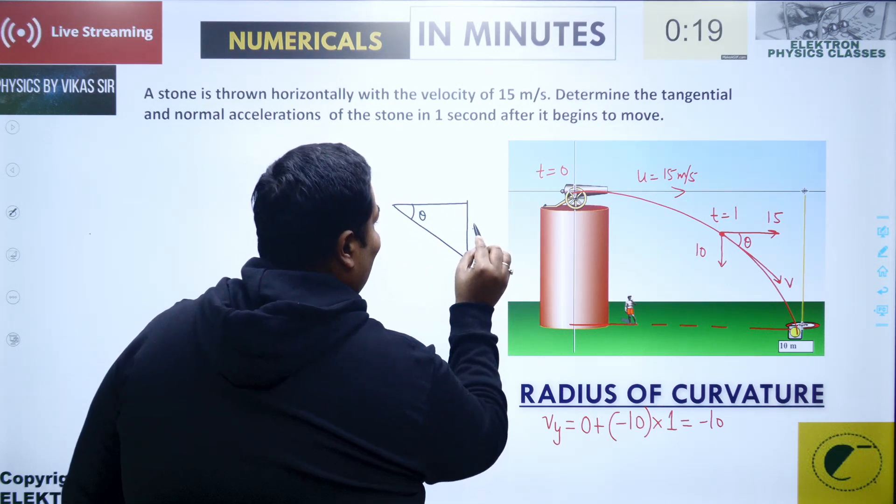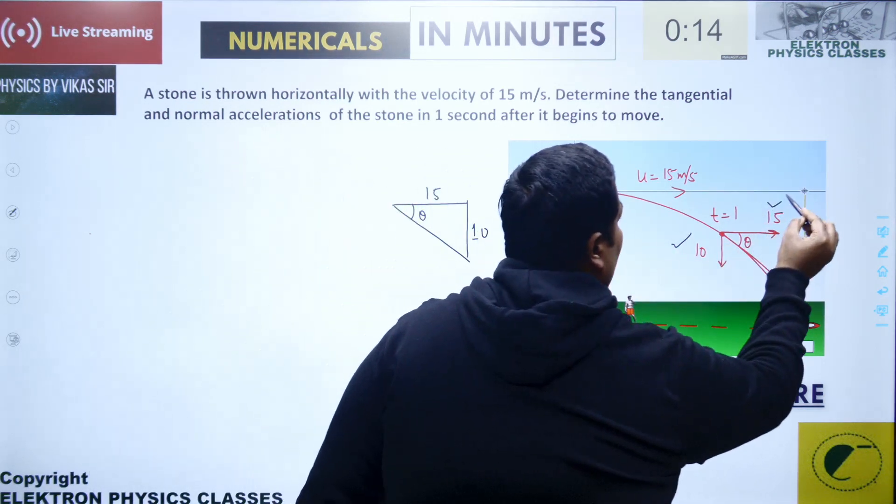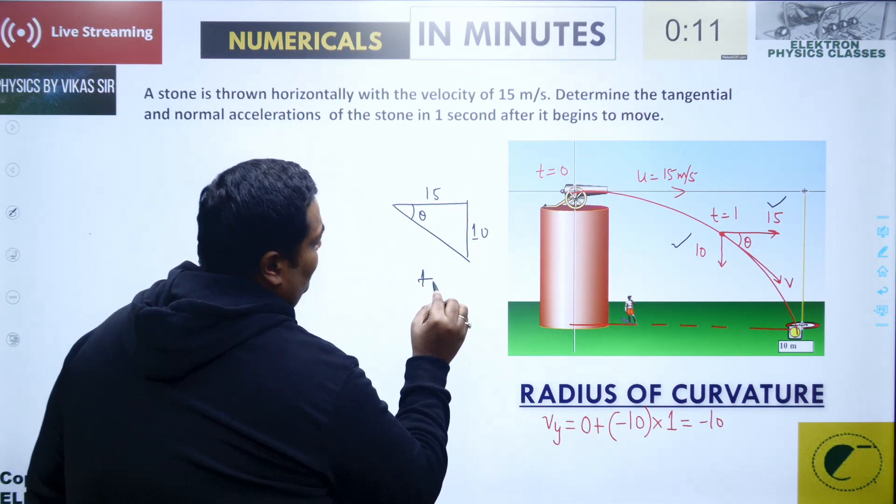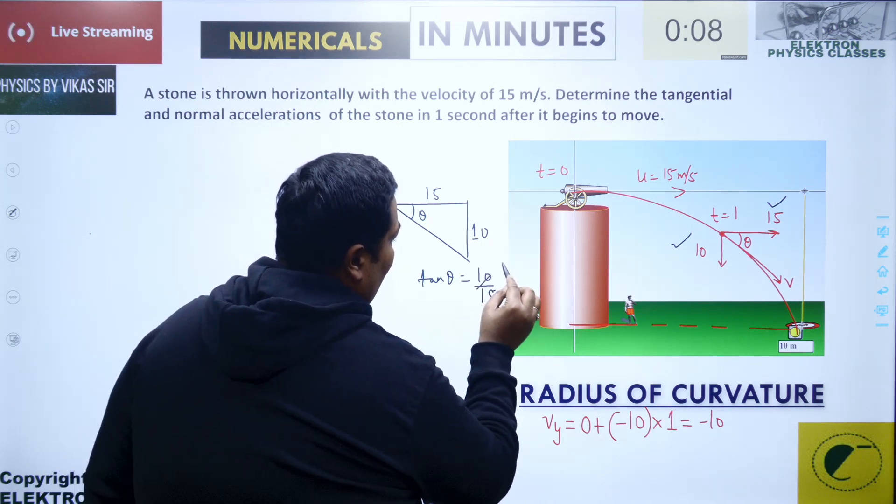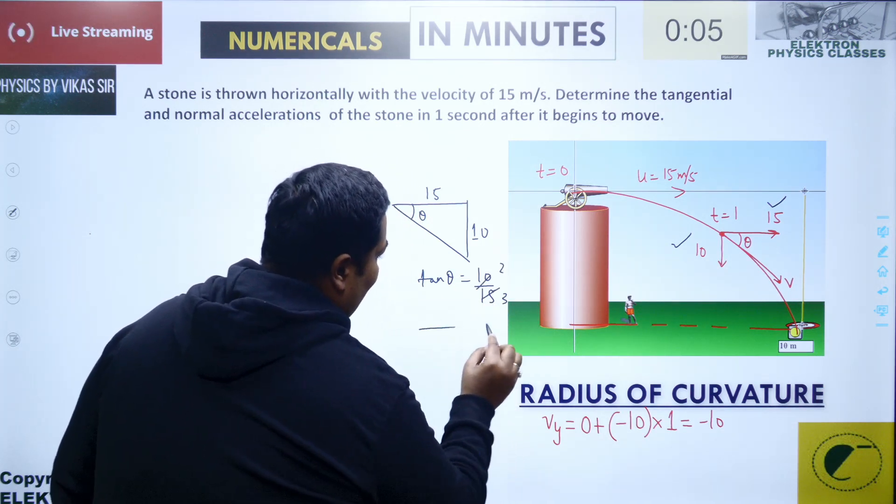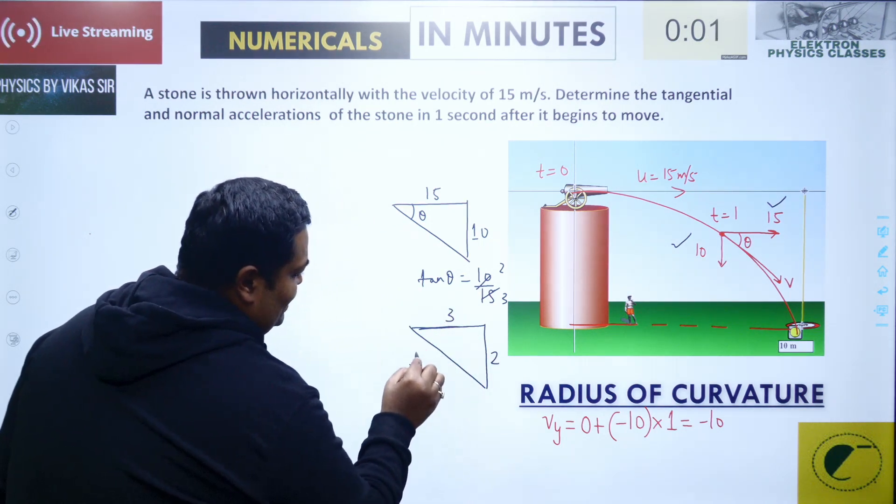So this side is 10, and this side is 15. So tan theta equals 10 upon 15, that's 2 by 3. If I keep this as 2, then this is 3, so this side will be root of 4 plus 9, which is root 13.